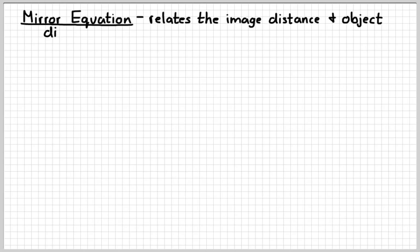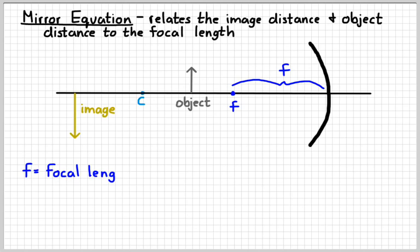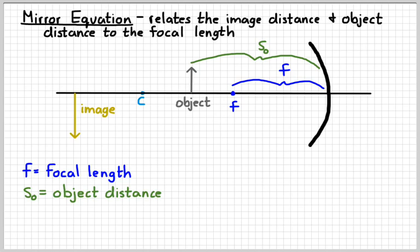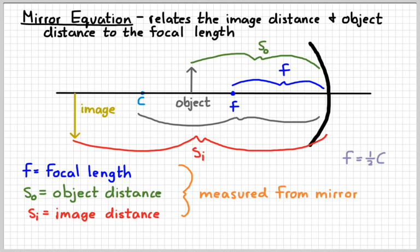Now, how can we relate these distances to each other mathematically? The distance from the focus to the mirror is F, the focal length. The distance from the object to the mirror is S-sub-O (object distance), and the distance from the image to the mirror is S-sub-I (image distance). Measure all distances from the mirror. The focus is one-half the radius of curvature. These distances are related by the mirror equation: 1 over F equals 1 over S-O plus 1 over S-I.